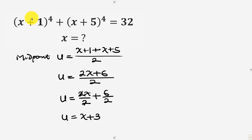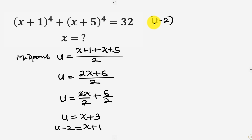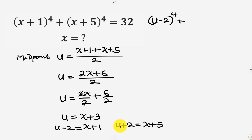Now let's rewrite the terms using u. For x+1: subtracting 2 from u gives u - 2 = x + 1, so x+1 is the same as u - 2, raised to the power 4. For x+5: adding 2 to u gives u + 2 = x + 5, so x+5 is the same as u + 2, raised to the power 4. So our equation becomes (u-2)⁴ + (u+2)⁴ = 32.